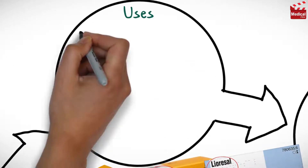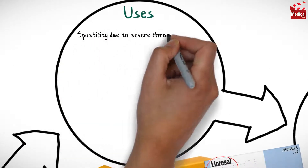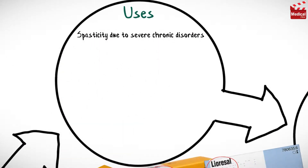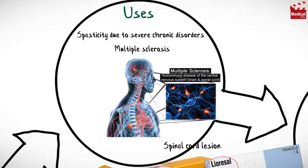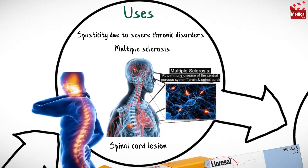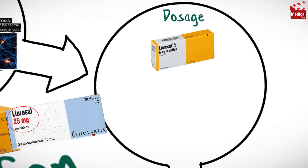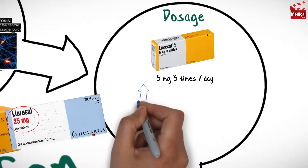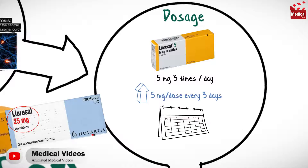Baclofen is used in the treatment of spasticity due to severe chronic disorders such as multiple sclerosis and spinal cord lesions. The usual dose of baclofen is 5 milligrams three times per day, which may be increased by 5 milligrams per dose every 3 days.